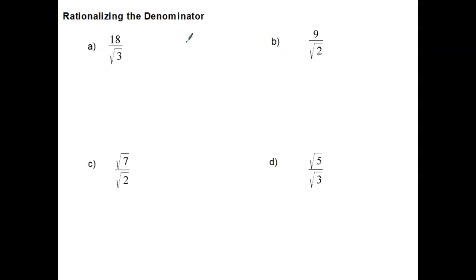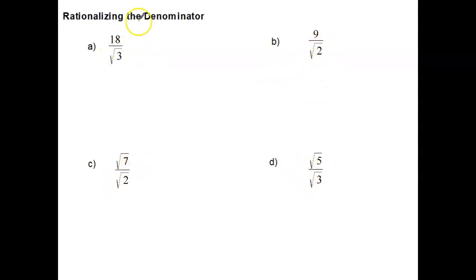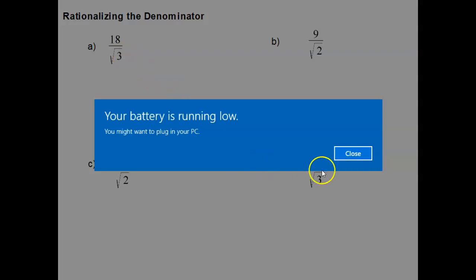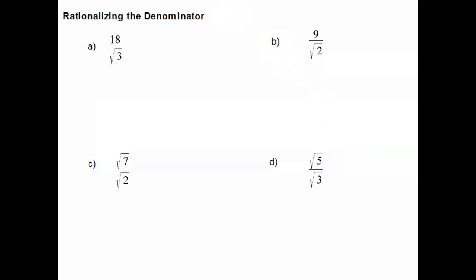What we want in the denominator is only rational numbers. So we're going to take these irrational numbers and turn them into rational numbers. Numbers like integers would be rational numbers. So we're going to take this one here and turn it into a bunch of rational numbers in the denominator.